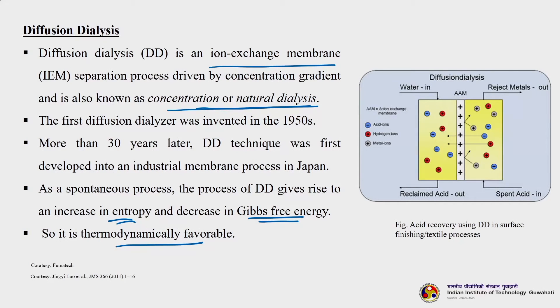In Donnan dialysis, when charged solutes are separated using an ion exchange membrane (either cation or anion exchange), there are differences in solute concentration on both sides of the membrane such that they do not form an equilibrium — there is a difference in concentrations due to diffusivity and membrane properties. This is known as Donnan equilibrium.